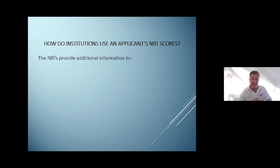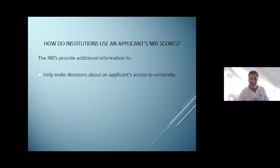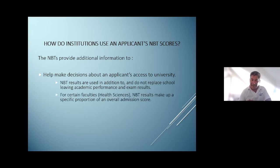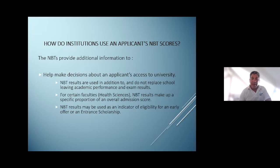How do institutions use an applicant's NBT scores? The NBTs provide additional information to universities to help them make decisions about an applicant's access to university. They are used in addition to, not replacing, your school-leaving NSC score — providing information around your academic potential. For certain faculties, for example Health Sciences at UCT, the NBT results make up a specific proportion of your overall admission score. NBT results may also be an indicator for eligibility for an early offer or entrance scholarship, and that also applies to bursary organizations.